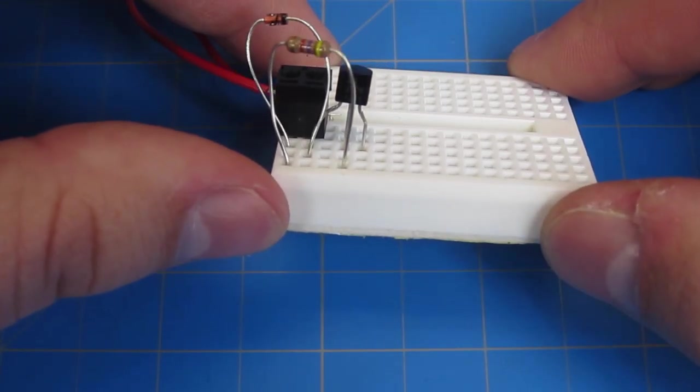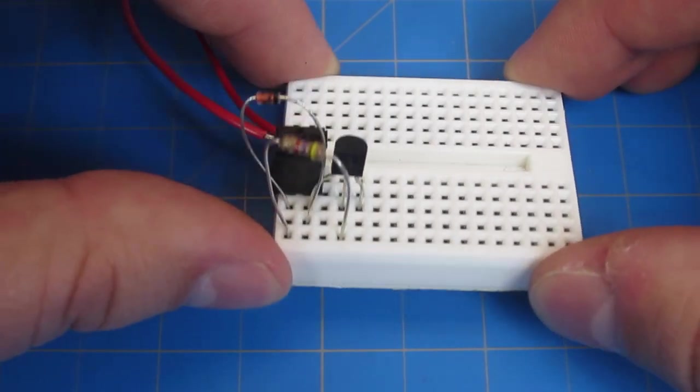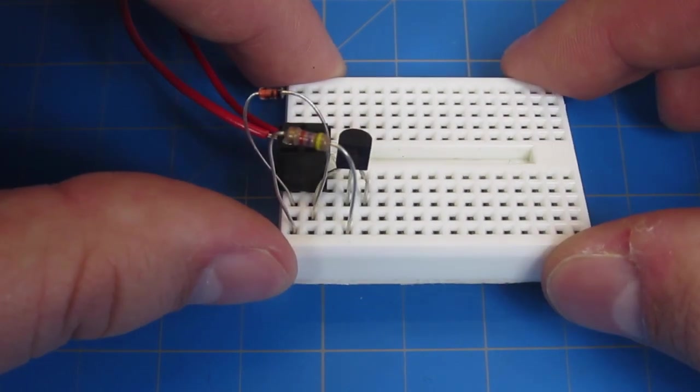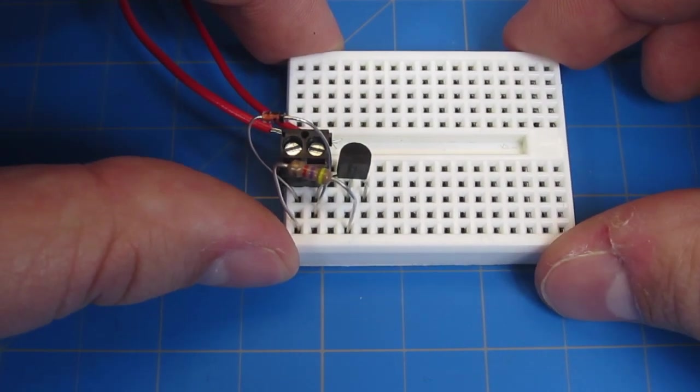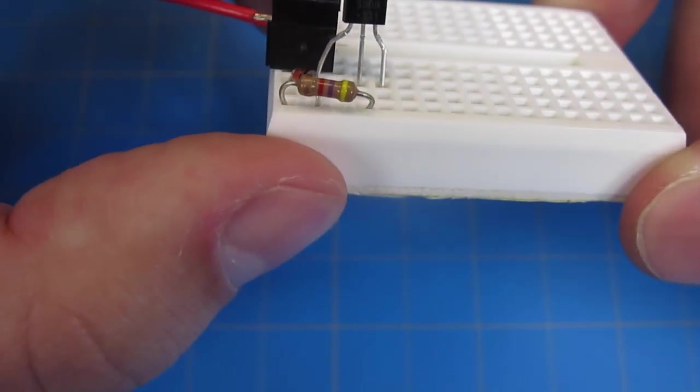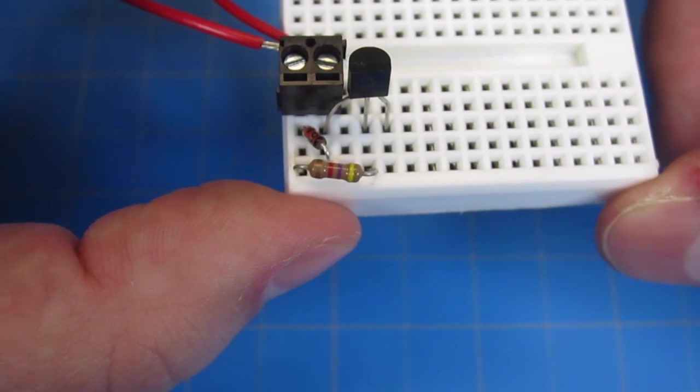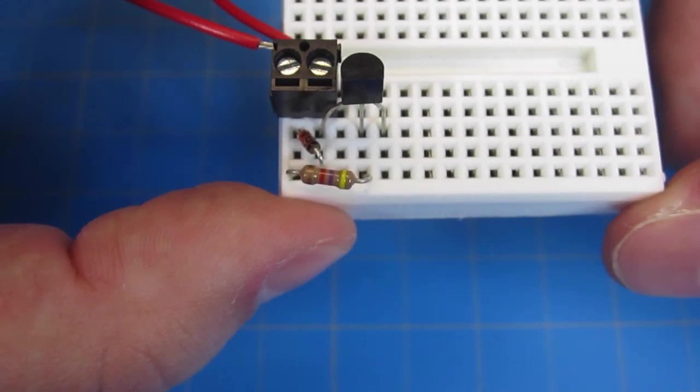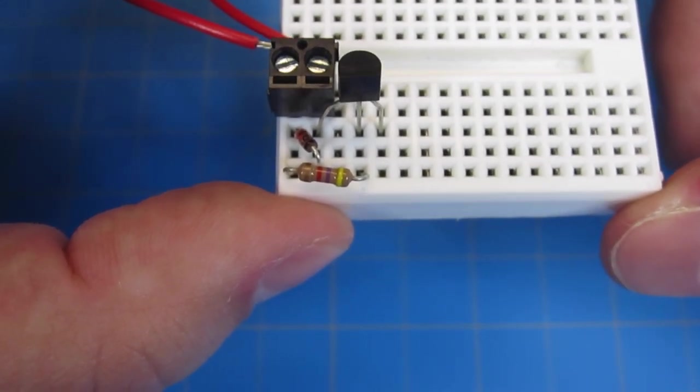Take your 4.7 kiloohm resistor. One leg will go in the first row and the other leg will go in the same row as the middle leg of your transistor, which in this case is row 4. To make life easier, I've cut down the legs of both the resistor and the diode. You can do the same thing with the transistor, but it's not sticking up very high.